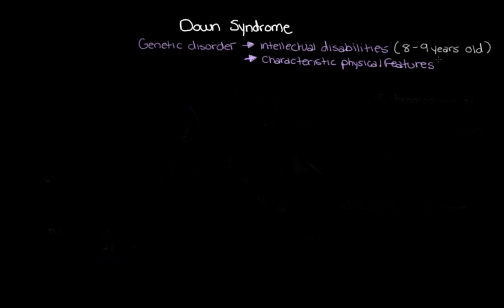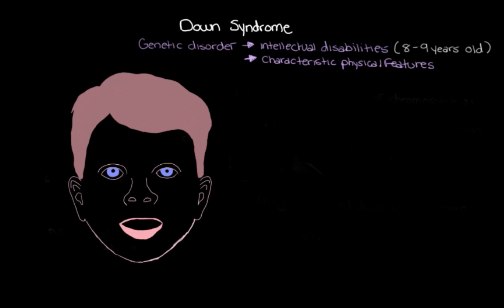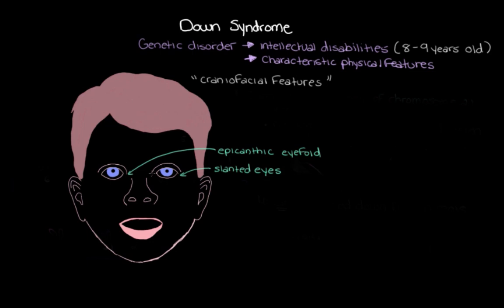One of the other main results of this extra genetic material is the distinct physical features that often make it clear that someone has down syndrome. Looking at the face and head area, we can see what we call the characteristic craniofacial features — 'cranio' meaning the skull. The eyes are a little bit slanted, and there's what we call an epicanthic eye fold, where the upper eyelid folds down at the inner corner of the eye. The nose is short and the nasal bridge is quite flat, and the whole facial profile is noticeably flat in general.